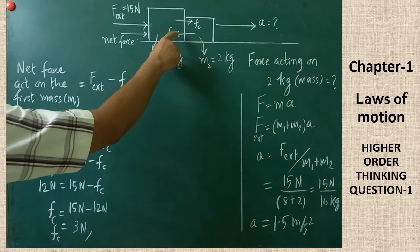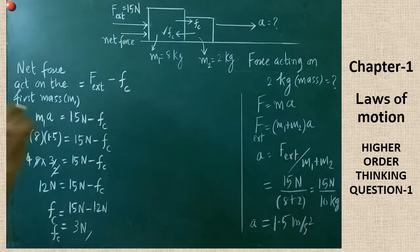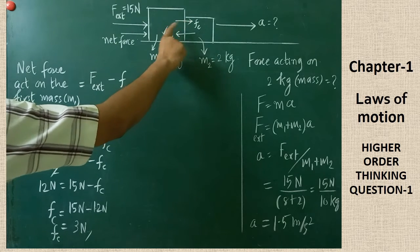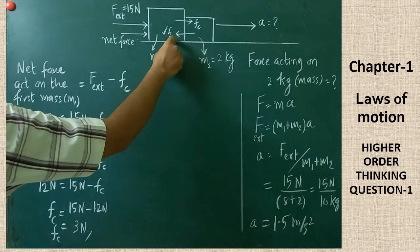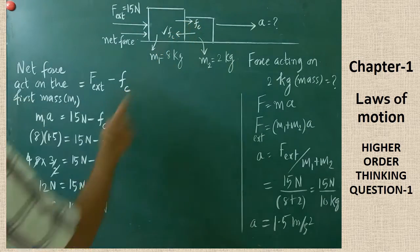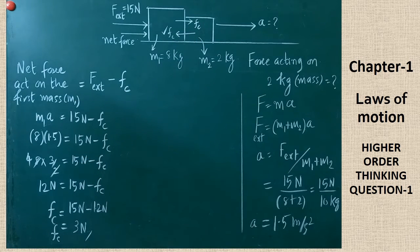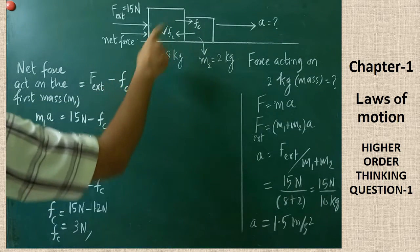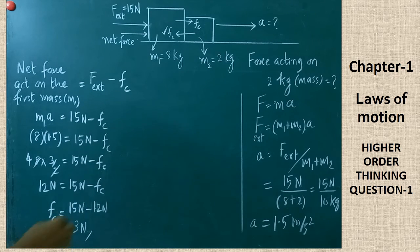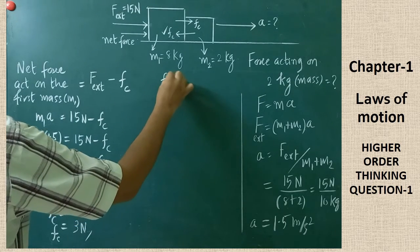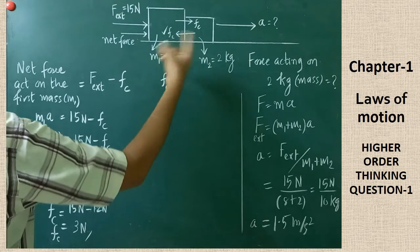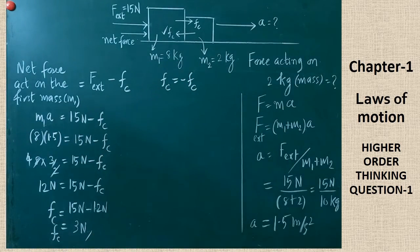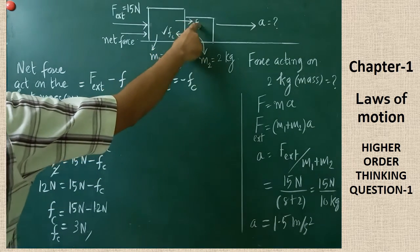The contact force acting on the first body has been calculated as 3 Newton. Both bodies exchange equal and opposite contact forces. The contact force acting on the first body due to the second body is 3 Newton. Therefore, by Newton's third law, the contact force acting on the second body due to the first body must also be 3 Newton — they are equal in magnitude but opposite in direction. Now I will prove that this Fc is also equal to 3 Newton.